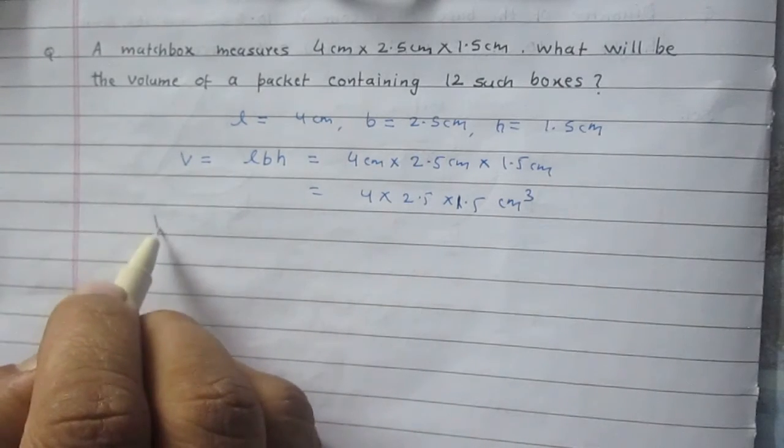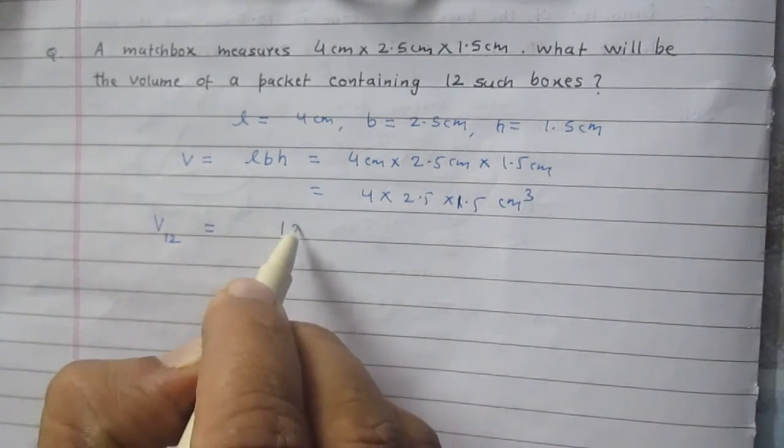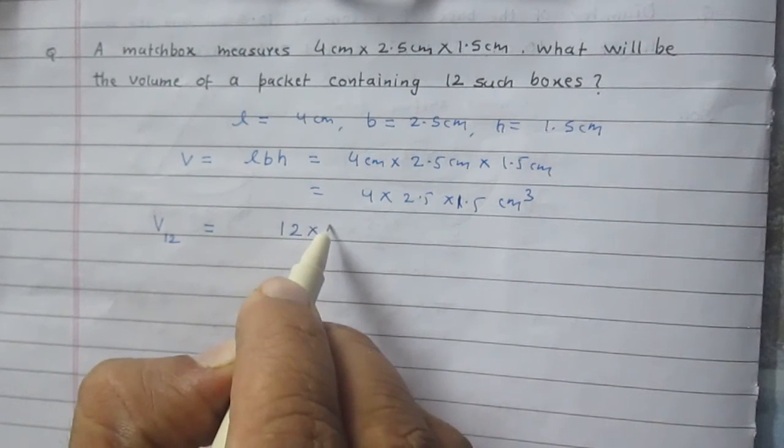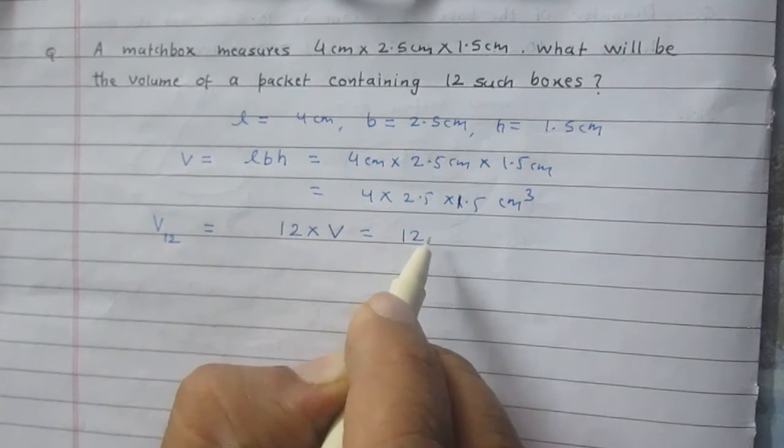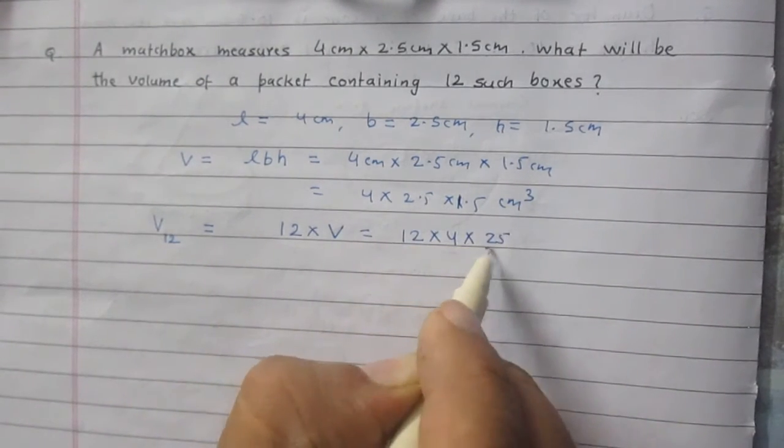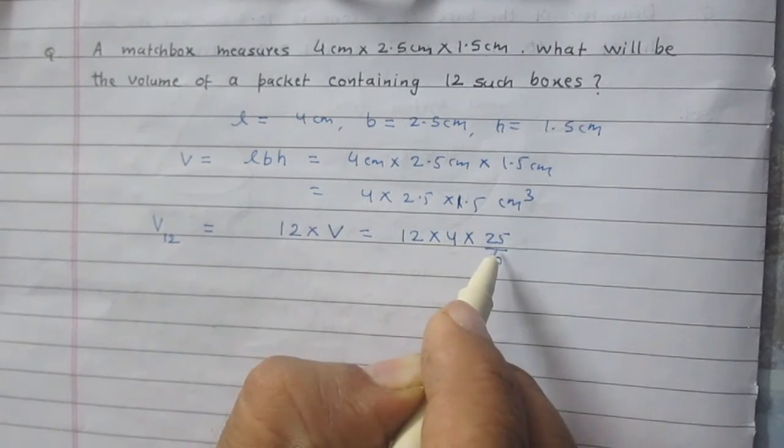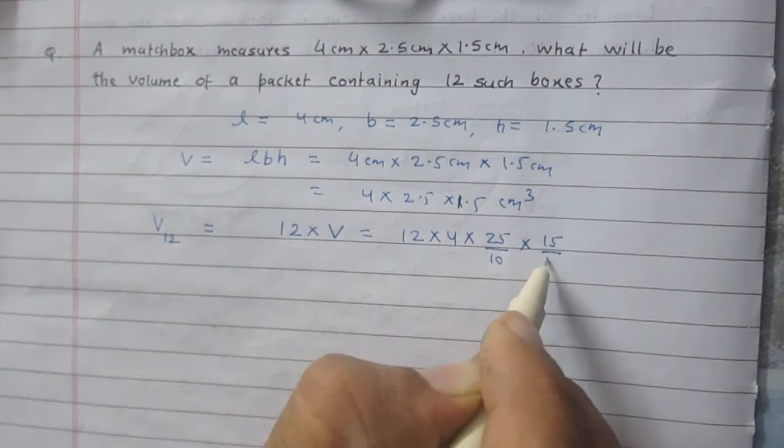Now volume of such 12 boxes is equal to 12 multiplied by the volume of a single matchbox. So it is 12 into 4 into 25 by 10. It is 2.5 actually. And 1.5 can be written as 15 divided by 10.